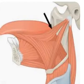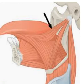Styloglossus muscle. Styloglossus muscles are originated from the stylohyoid process of the temporal bone. The main function of this muscle is to elevate and retract the tongue.